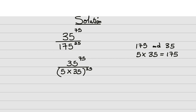Check out this law: if you have (a × b × c) all raised to power n, it is the same thing as a raised to power n, times b raised to power n, times c raised to power n.